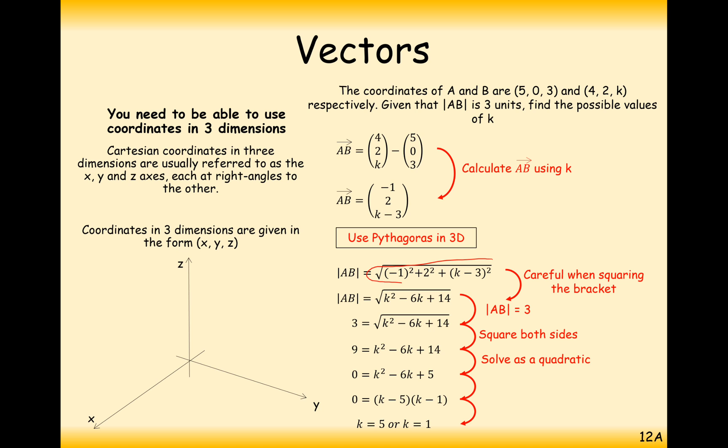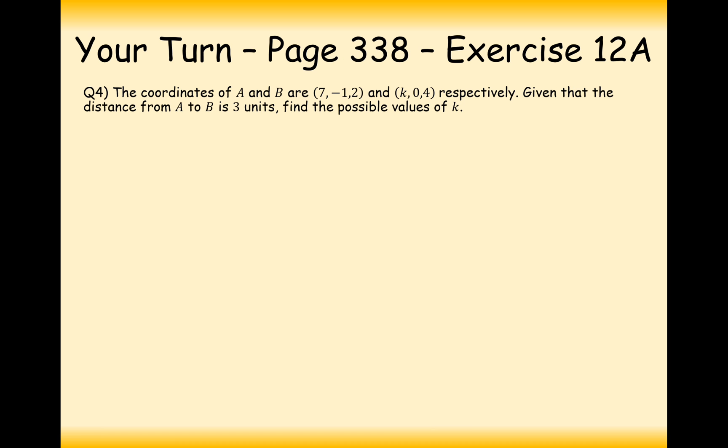The key to this problem was to do some 3D Pythagoras using the distance between coordinates A and B. It doesn't matter that there's a K in there. You keep the K in and then set your answer equal to 3, or however long the distance between the two coordinates is.